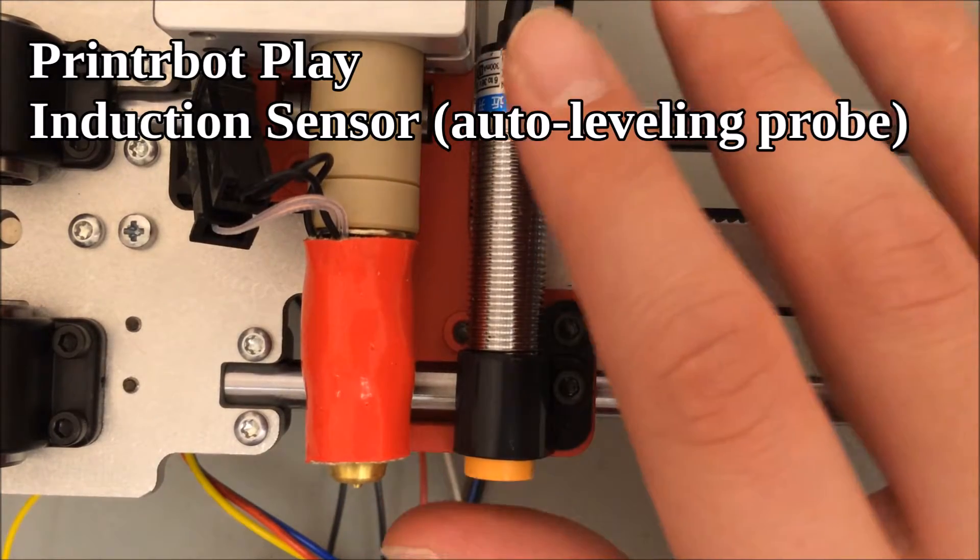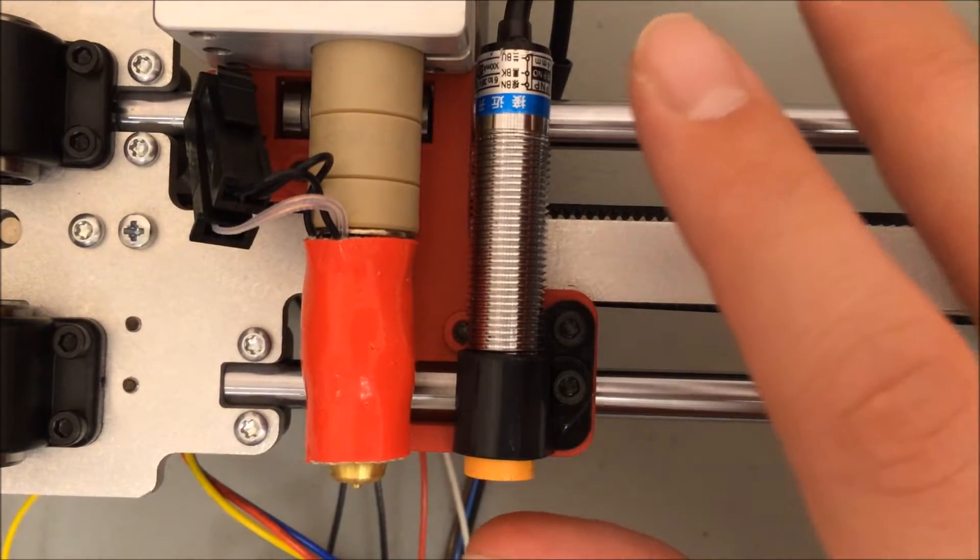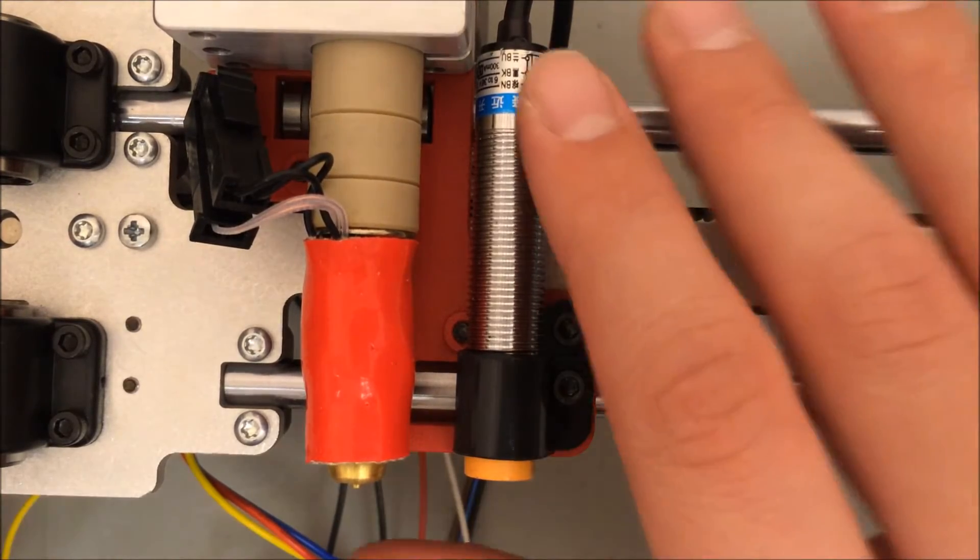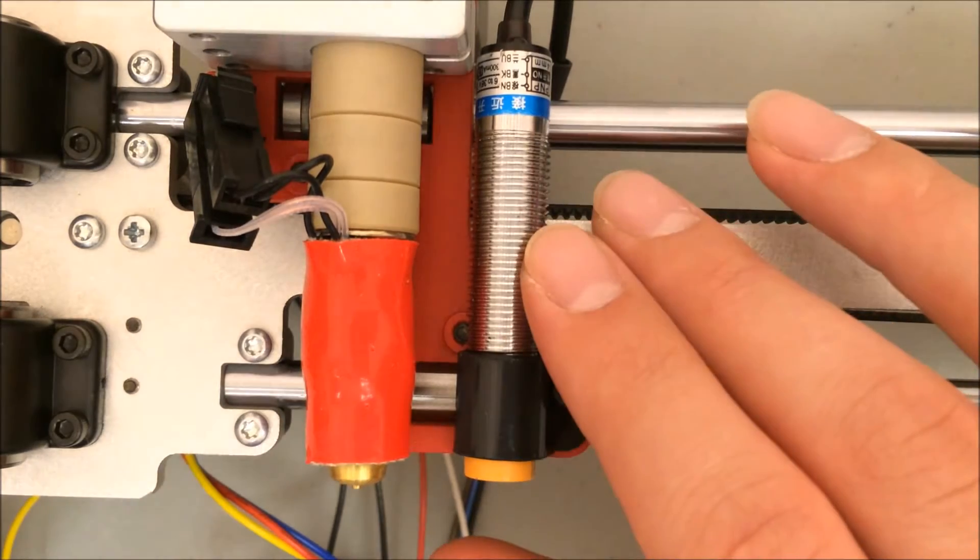This piece is the auto leveling probe. It's called that because when your print starts it detects the corners of the print bed and then determines the Z height.